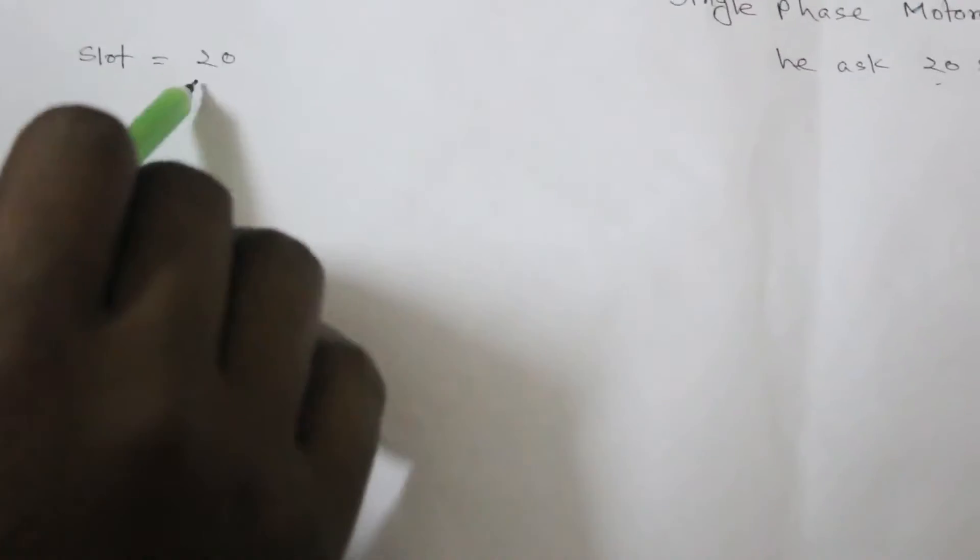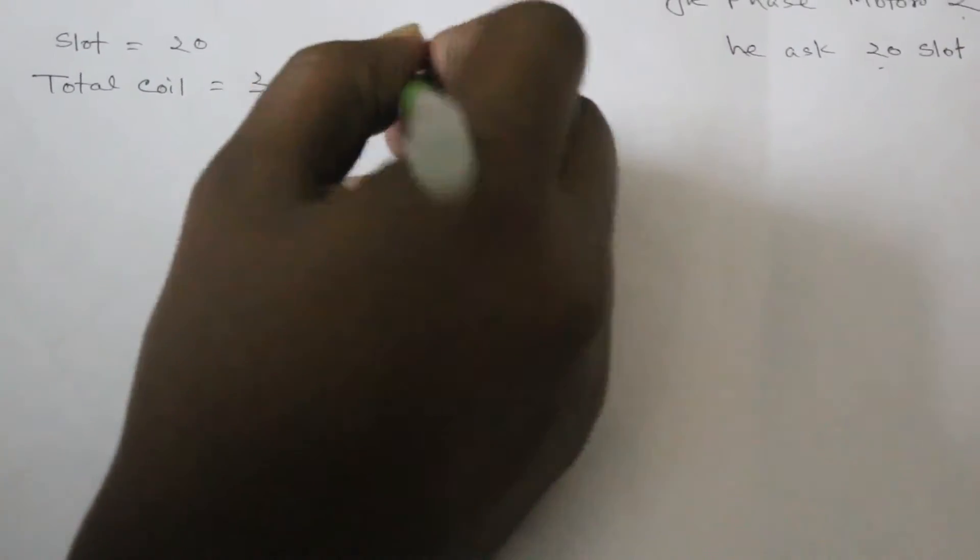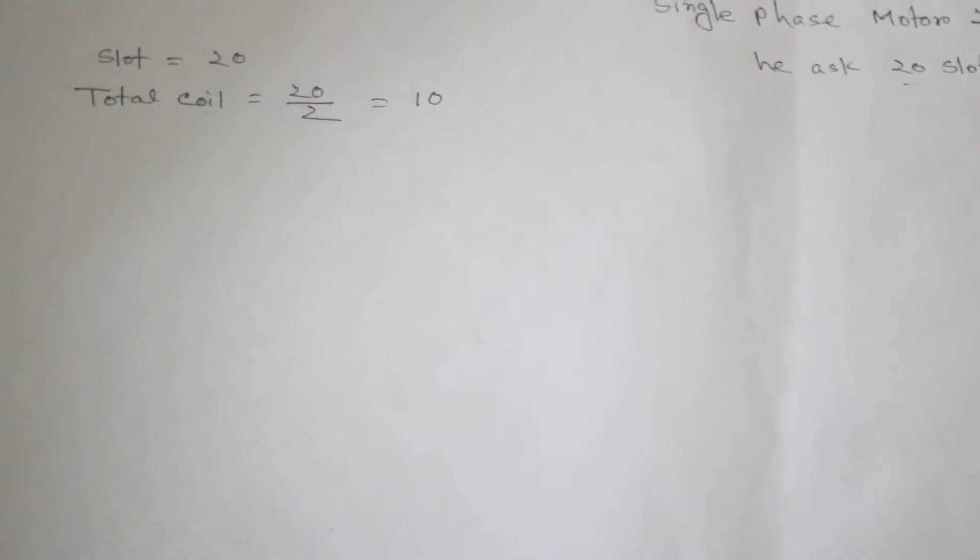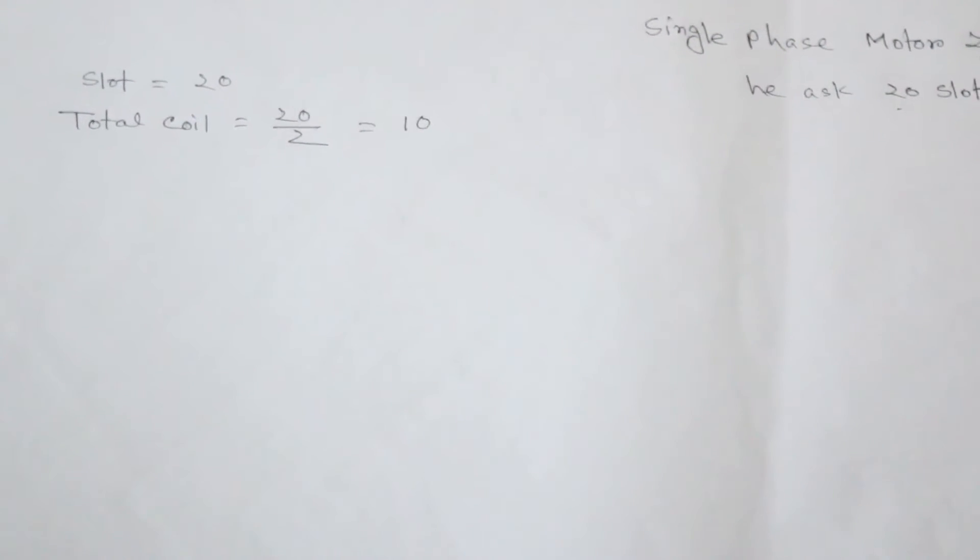So 1 coil need 2 slot, so total coil is 20 divided by 2 equal 10. This is half of slot. So single layer, this total coil is half of slot. And double layer, the number is same of total coil.